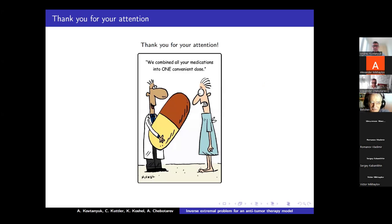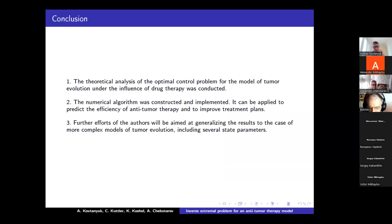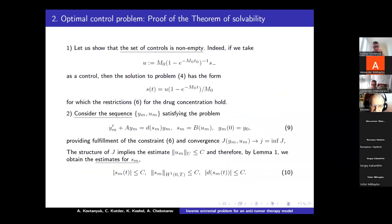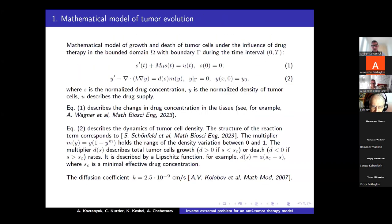Thank you very much for this very optimistic talk — the final pictures look very optimistic. Could you return to the original statement to clarify the meaning of parameter Y? Y is the normalized density of tumor cells. We consider that the maximum level is equal to 1, so Y ranges from 0 to 1.